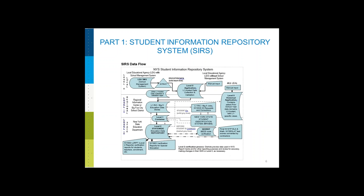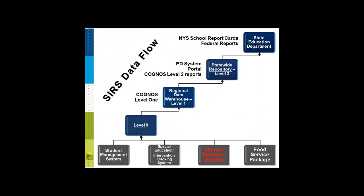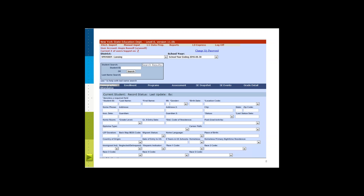When you open the CERS manual, you'll see a detailed data flow. We've broken it down to make it easier to understand. Data flows through CERS from several source systems: a student management system, a special education system, a human resource system, and a food service package. We pull extracts from each of these systems and load them into level zero. These systems can vary across the state, and there are several to choose from. When data is loaded into level zero, those demographic fields are populated.